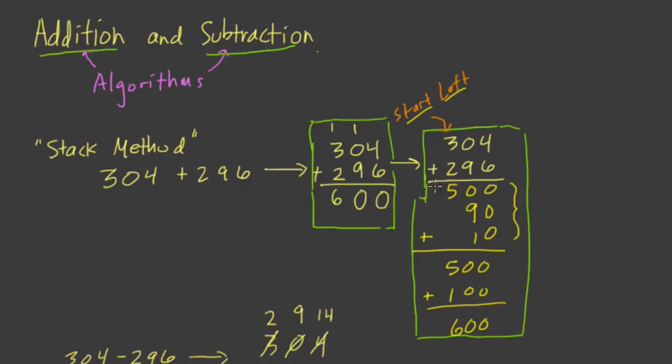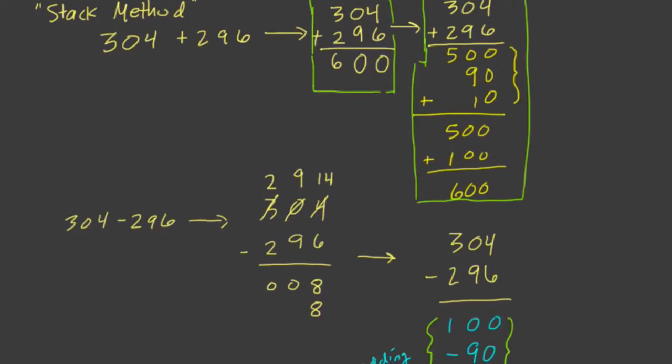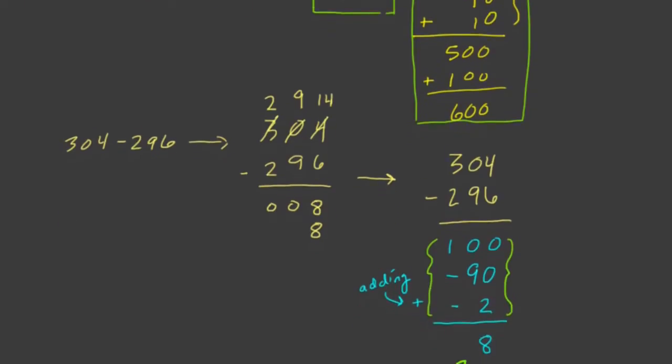Again, adding the largest place value, I think, taps more into your intuition, because you can estimate where the number is immediately instead of looking at the 1's value first and then working your way up to the larger place values. The same for subtraction.